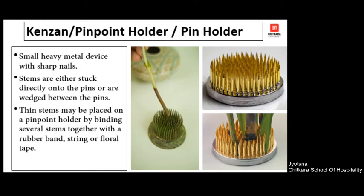Next is the Kenzan, also called as Pin Point Holder or Pin Holder. This is a metallic circular structure which has certain pins or nails on it. This is again used in the flower arrangement — when you have to place the flower, as you can see in the picture, the single stem is very nicely inserted and fixed in between the nails. This way it holds the entire plant material in a flower arrangement.